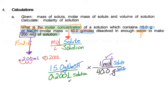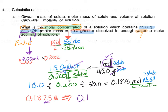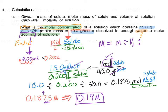Now we put it into the calculator: 15 divided by 0.2, then divide by 40, which gives 0.1875 moles of NaOH per liter of solution. Rounding to two decimal places — because the 7 rounds the 8 up — the answer is 0.19 M. For those who prefer to memorize patterns: molarity M equals the mass of the solute divided by the volume of the solution divided by the molar mass of the solute.